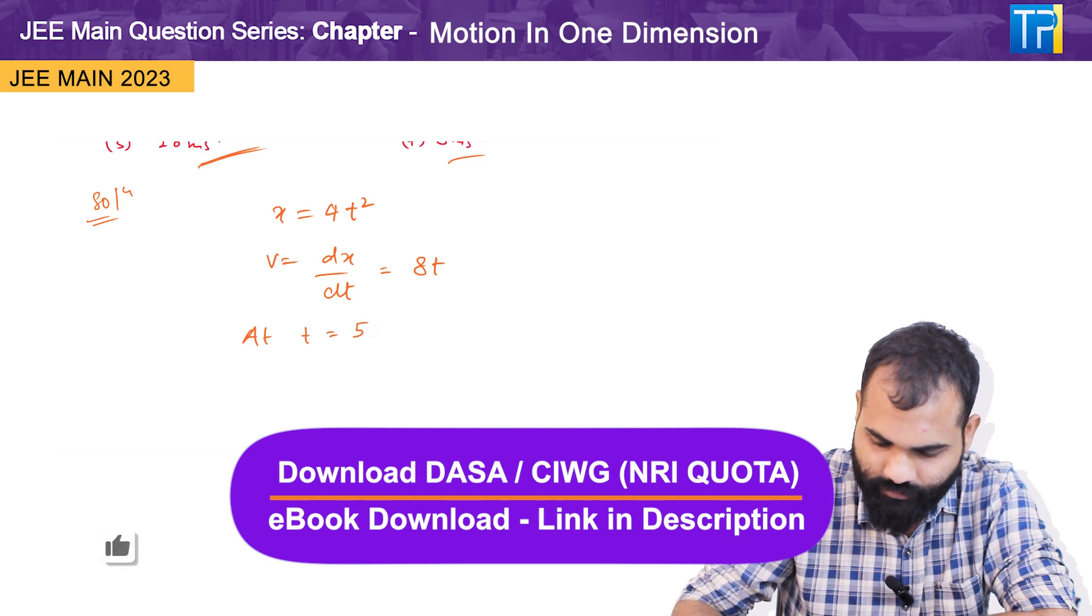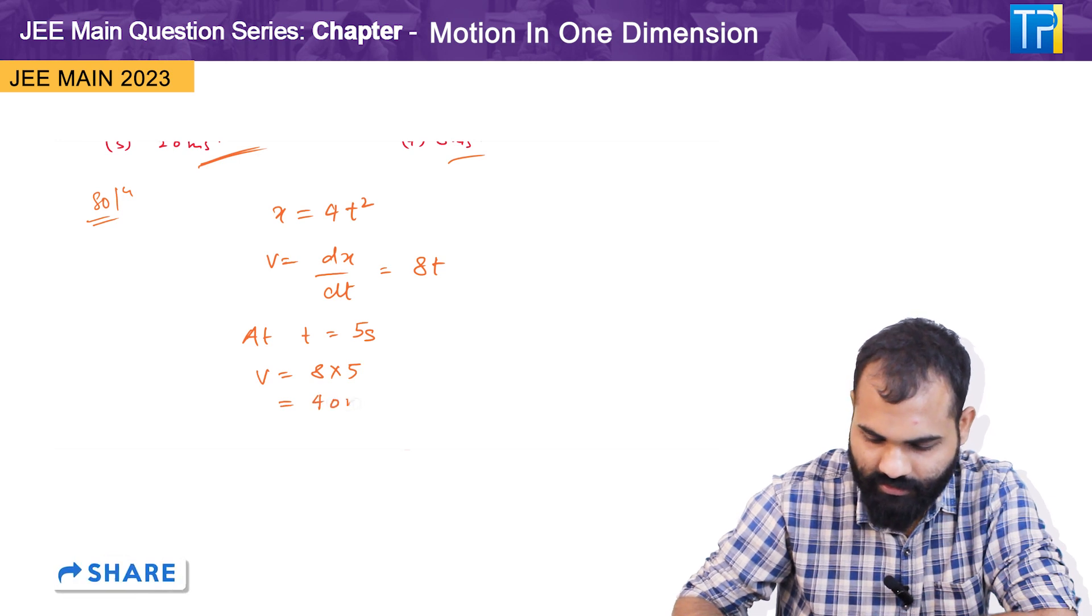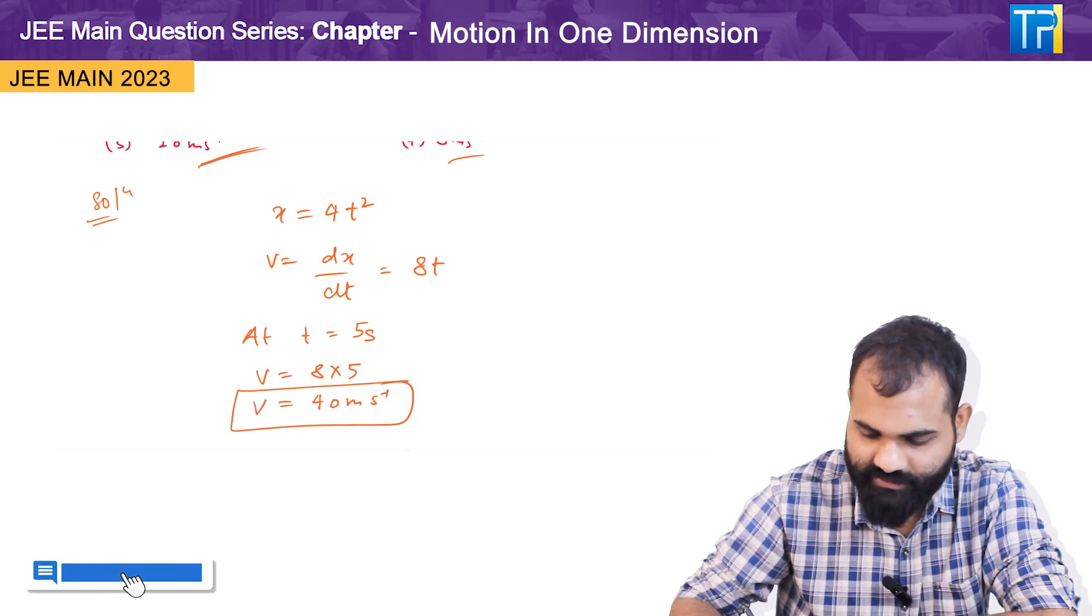v at t equals 5 seconds equals 8 into 5, which is 40 meter per second.